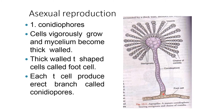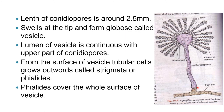The cells vigorously grow and the mycelium becomes thick-walled. These thick-walled T-shaped cells are called foot cells. Each foot cell produces an erect branch called a conidiophore. The length of the conidiophore is around 2.5 mm. It swells at the tip and forms a globe called a vesicle. The lumen of the vesicle is continuous with the upper part of the conidiophore.